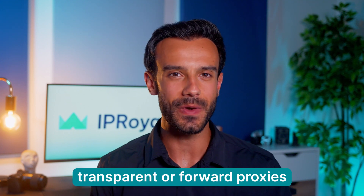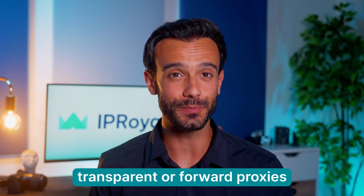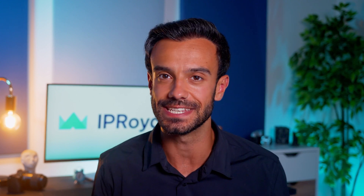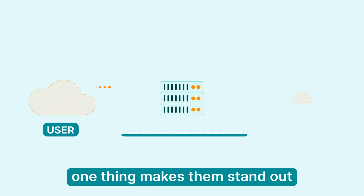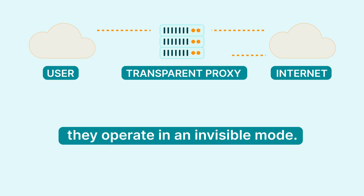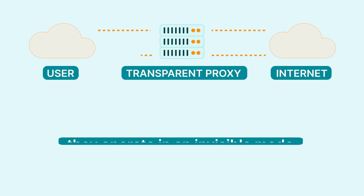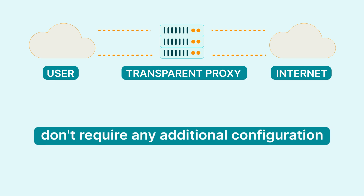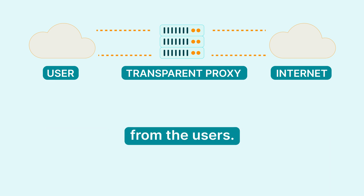As we already know, transparent or forward proxies intercept and forward network traffic between a user's device and the rest of the internet. However, one thing makes them stand out — they operate in an invisible mode. They're called transparent after all. In other words, they don't require any additional configuration from the user. You usually don't even know if you're using one.